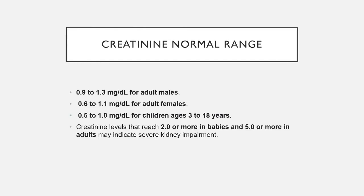The normal range for an adult male is up to 1.3 mg per deciliter, and for females it is 1.1 mg per deciliter. Between 3 to 18 years, it is 0.5 to 1.5. A creatinine level more than 2 in children or more than 5 in adults usually indicates severe kidney damage.